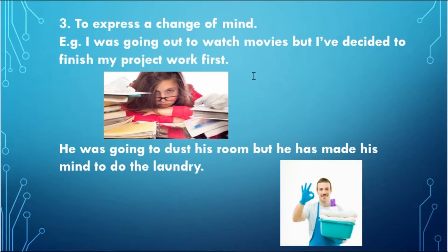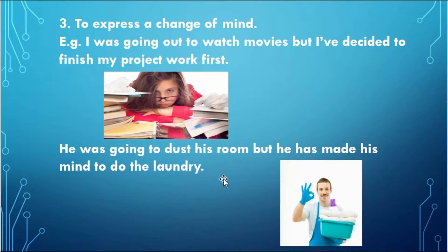Next, it is used to express a change of mind. For example: 'I was going out to watch movies, but I have decided to finish my project work first because I have to submit it tomorrow.' Past continuous tense is used to show a change of mind — first I decided to watch movies, then I decided to finish my project. Look at the next one: 'He was going to dust his room but he has made his mind to do the laundry first.' He was going to — that is in past continuous.